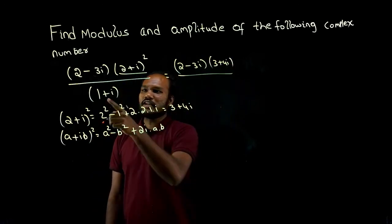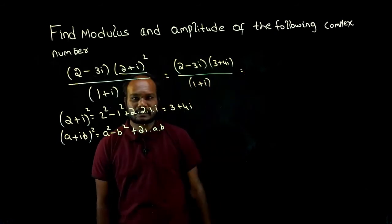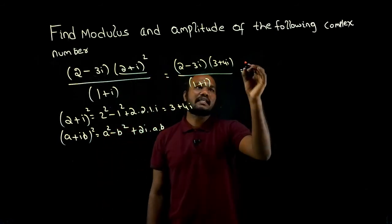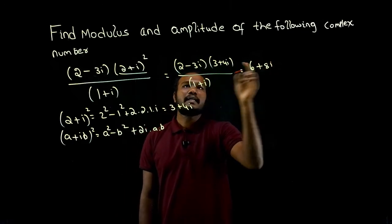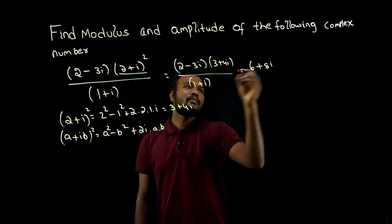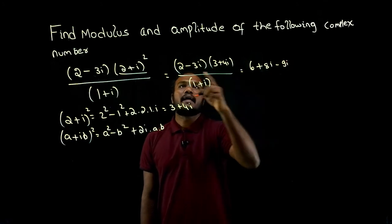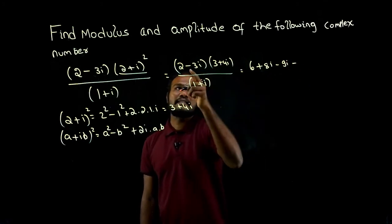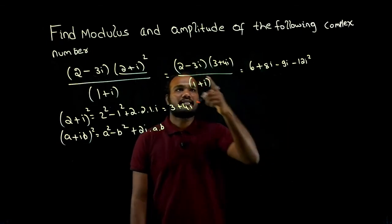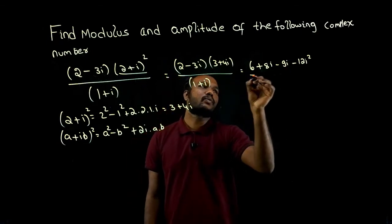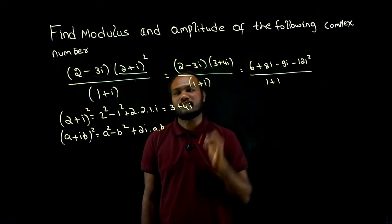Divided by the denominator (1 + i). Now expanding the numerator: 2 into 3 is 6, 2 into 4 is 8i, plus into minus gives minus 3 into 3 is 9i, and minus into plus gives minus 3 into 4 is 12i². In the denominator we have 1 plus i.